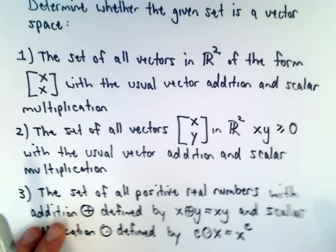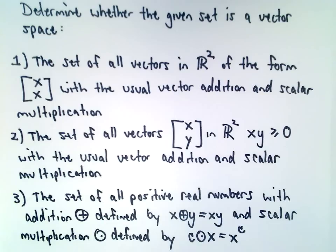So here's the three questions that I'm going to address. I encourage you to try these first. Decide whether or not you think these are vector spaces or not. If you're really stuck, maybe watch the first one and see how I go about the process, and then try number two and three on your own. So we're going to determine whether each of these sets is a vector space or not.